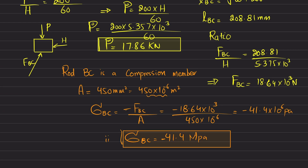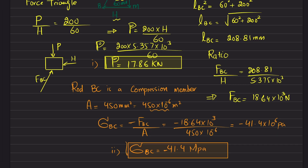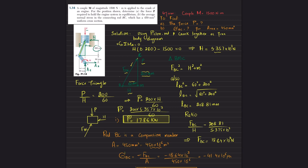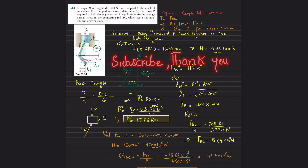So −41.4 MPa is the answer to part B, and 17.86 kN is the answer to part A. That was problem 1.14 from Mechanics of Materials by Beer and Johnston. I hope you enjoyed and learned from this video. If you are new to my channel, please subscribe and press the bell icon for notifications. If you have any questions, ask in the comment section. Thank you for watching.